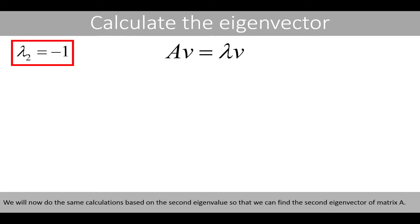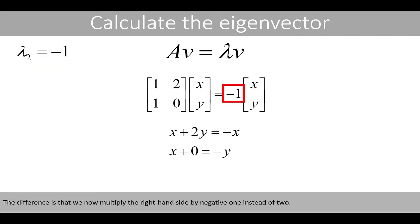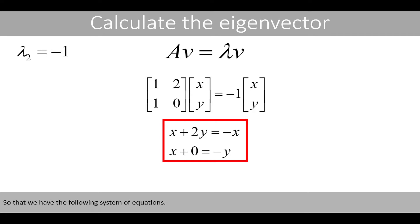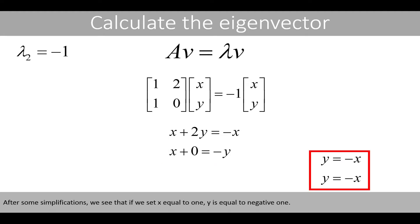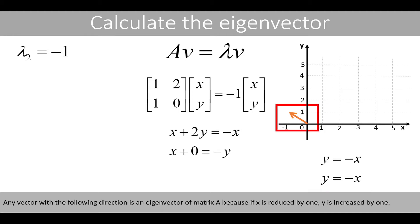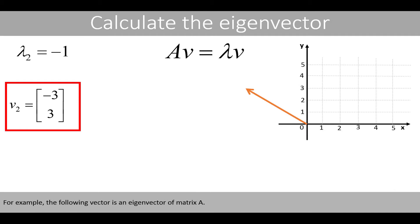We'll now do the same calculations based on the second eigenvalue so that we can find the second eigenvector of matrix A. The difference is that we now multiply the right-hand side by negative 1 instead of 2, so that we have the following system of equations. After some simplifications, we see that if we set x equal to 1, y is equal to negative 1. Any vector with the following direction is an eigenvector of matrix A because if x is reduced by 1, y is increased by 1. For example, the following vector is an eigenvector of matrix A.